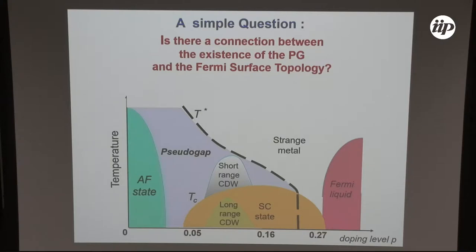Now I will try to answer a very simple question: is there a connection between the existence of the pseudogap and the Fermi surface topology? And especially, what happens when the pseudogap collapses inside the superconducting dome?